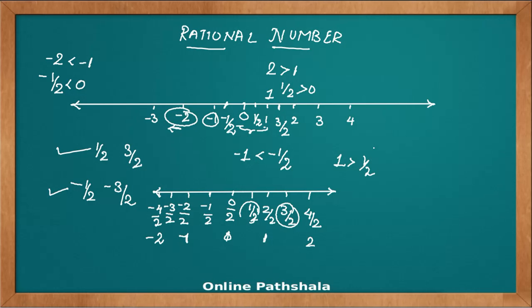The same thing applies to rational numbers: minus 1/2 is less than 0, but positive 1/2 is greater than 0. Today we learned how to represent rational numbers on a number line and how to compare them — which rational numbers are smaller and how to position them.